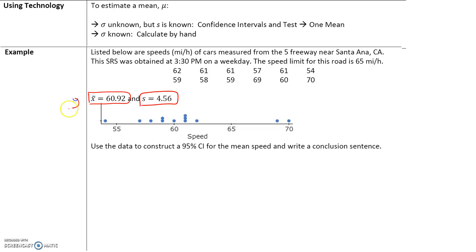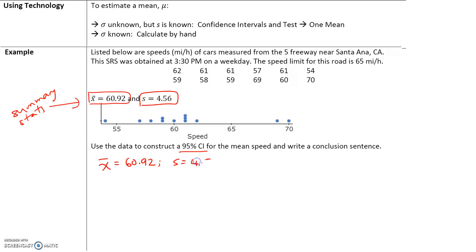We can calculate this using summary statistics in our calculator, but that's already been done. To construct the confidence interval, we need: the sample mean x-bar = 60.92, the sample standard deviation s = 4.56, and the sample size n = 12. For the critical value t-star, we need a 95% confidence interval, leaving 5% across two tails — 2.5% in each tail — with degrees of freedom = n minus 1 = 11. From our previous example, the critical value is 2.20.